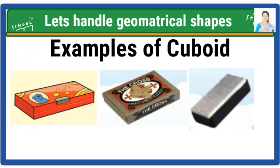These are some examples of cuboid: compass box, matchstick box, and duster.